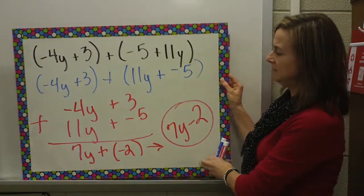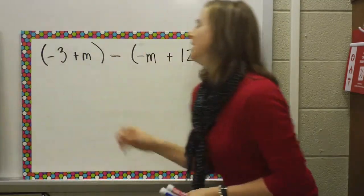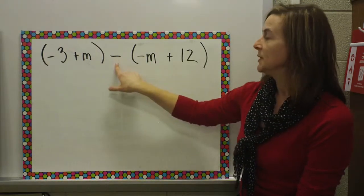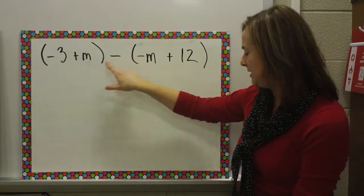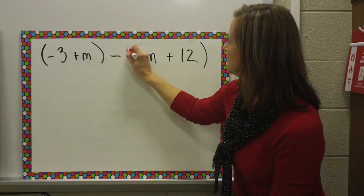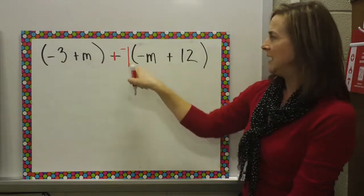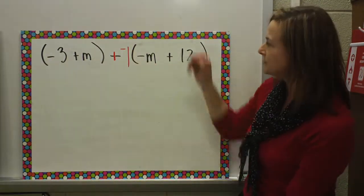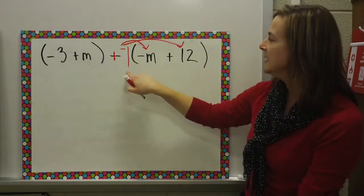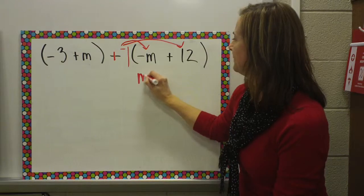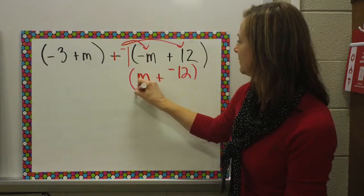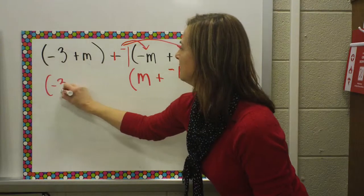In my very last example, I have a negative three plus m minus a negative m plus twelve. I am subtracting the expressions, so I'm going to get that ghost one back in there. Anytime I'm subtracting an expression, I just put that ghost one in there so that when I add the opposite, I have something to change to the opposite. Then I want to get that negative one out of the way, so I'm going to distribute it into my expression. A negative one times a negative m is a positive m. A negative one times a positive twelve is a negative twelve. And I bring this down: negative three plus m.